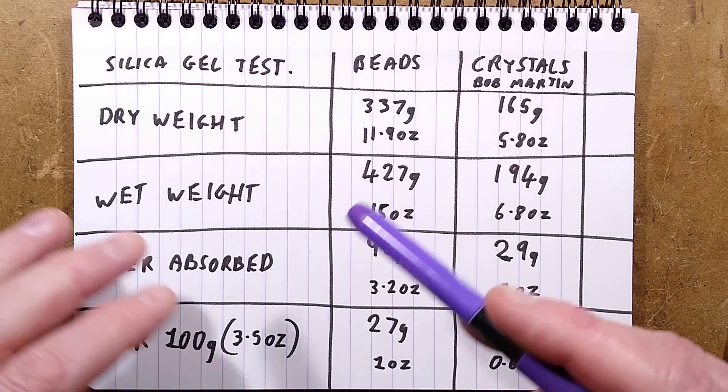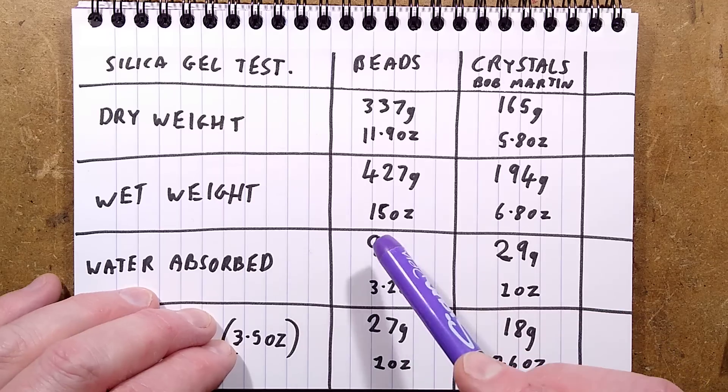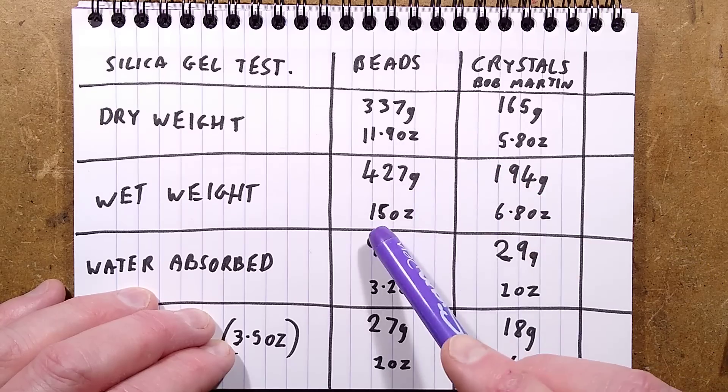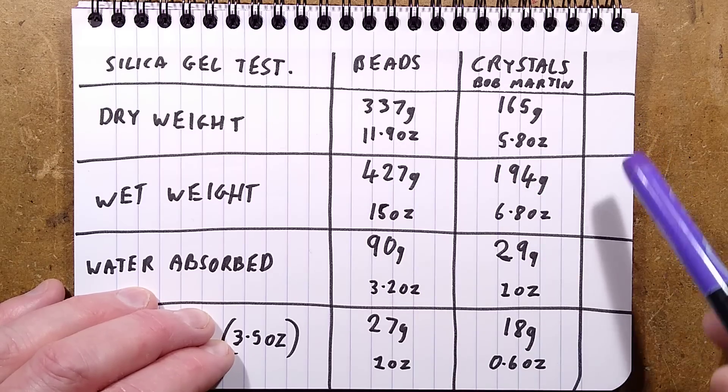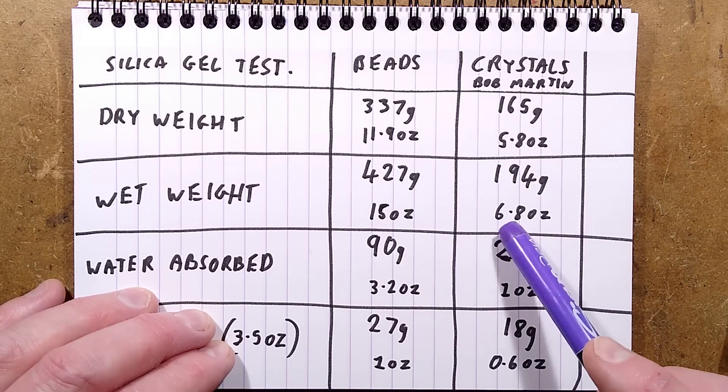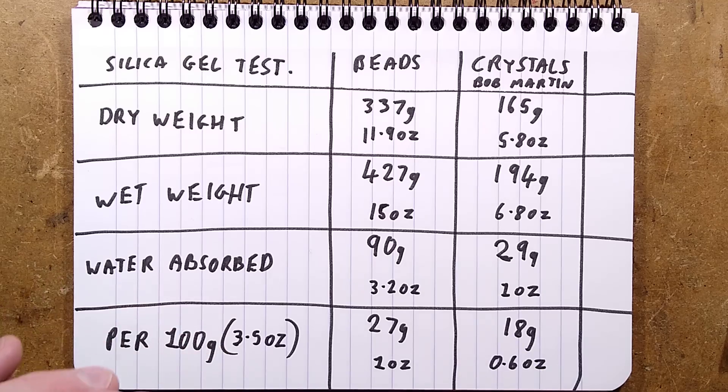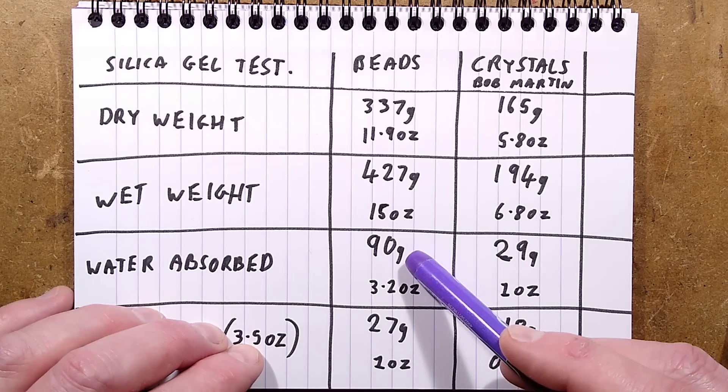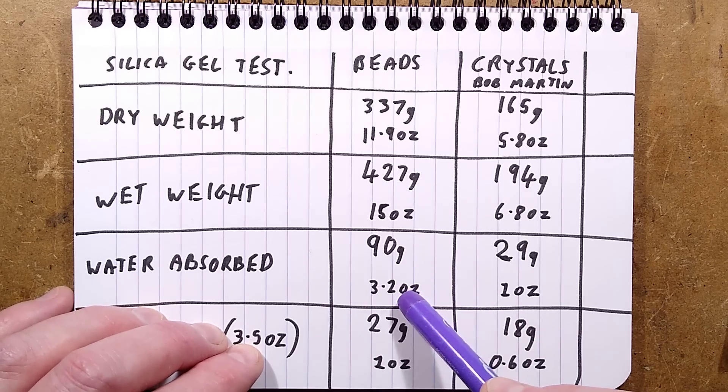Once I had absorbed the weight of all the water from the air that it could, the weight had gone up to 427 grams for the beads or 15 ounces and for the crystals it had gone up to 194 grams or 6.8 ounces. That means the water absorbed by each of those cartridges was 90 grams, that's 90 milliliters which is really impressive, or 3.2 ounces. And for the crystals it was about a third of that, 29 grams or 1 ounce.